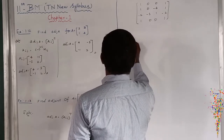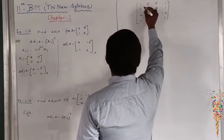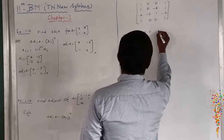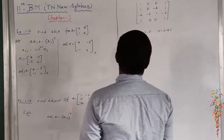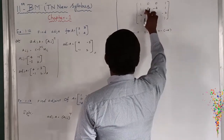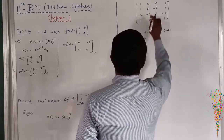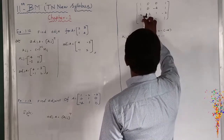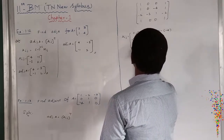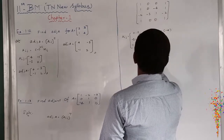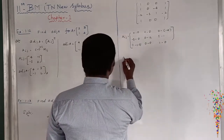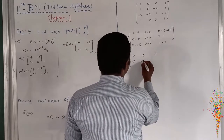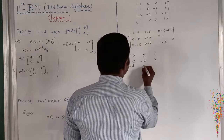Computing Aij: the elements are 0 minus 0, then 0 minus 0, then 0 minus minus 4 giving plus 4, then minus 3 minus 0, then 0 minus 4 giving minus 12, then 8 minus 1 giving 7, then 0 minus minus 3 giving plus 3, then 0 minus 0, and finally 1 minus 0. Therefore Aij equals [0, 0, 4; minus 3, minus 12, 7; plus 3, 0, 1].